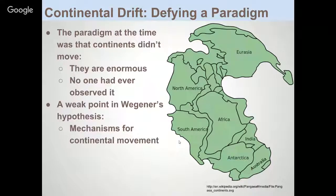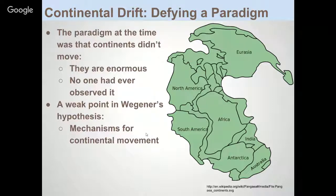The prevailing paradigm at the time was that the continents were stationary — they're enormous, and nobody had ever observed a continent moving, so it must be wrong. And as mentioned earlier, the key weakness in Wegener's hypothesis was that he did not have a mechanism. He couldn't explain how the continents were moving.